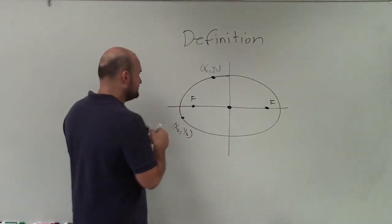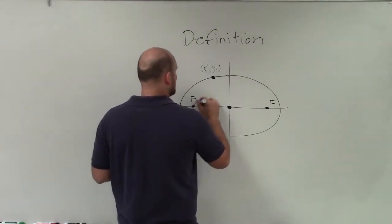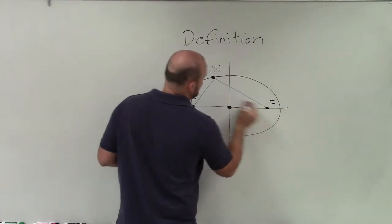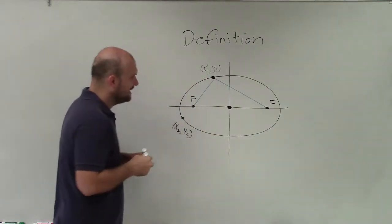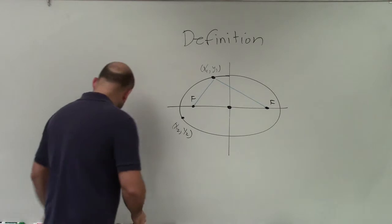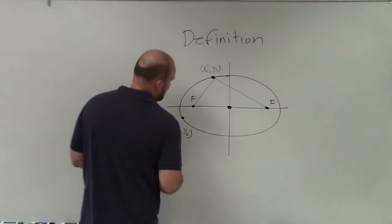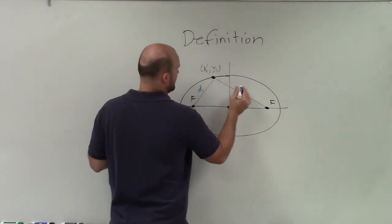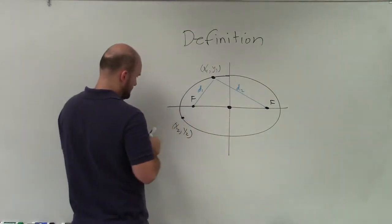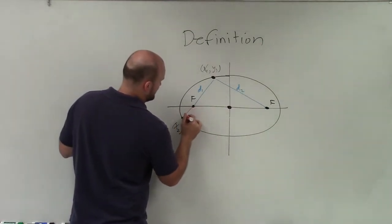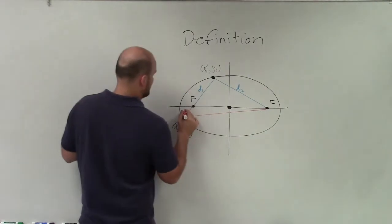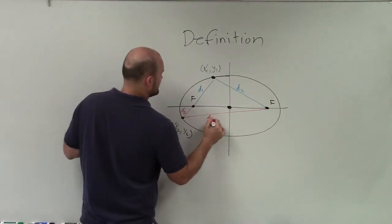Well, the sum of the distance from a point to both foci is going to be equal for every single point. I'll call this d1, d2, and then we'll have here d3, d4.